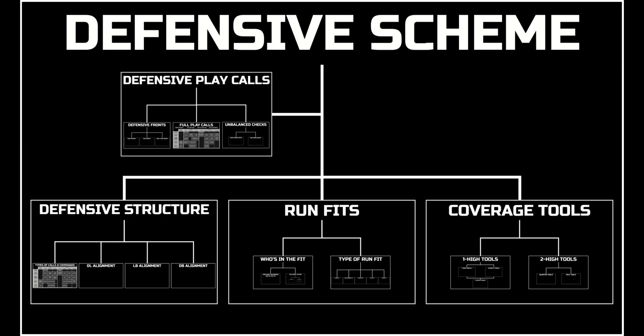When we talk about learning football, probably the most important thing to learn is defensive scheme — to understand the full picture of what's going on on any given play. In order to learn defensive scheme, the first thing we need to do is understand basic defensive structure: how many players are rushing the quarterback on a pass, how many are in coverage. Before we dive deep into any specific coverage tools, we need to understand the basic structure of safeties and basic coverages.